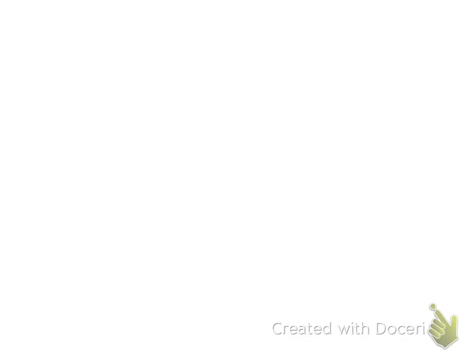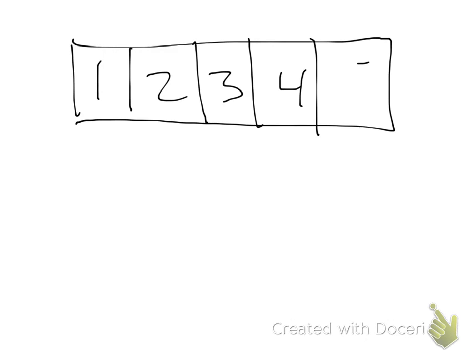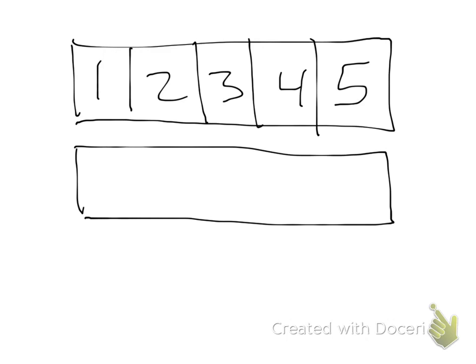Take a look. If I have a rectangle and here's my fifths. 1, 2, 3, 4, 5. And here's my other rectangle that I want to add together. Can I add 1 fifth and 1 half? No, they're not the same size. I need 2 and 1 half of the fifths to even match 1 half of this rectangle.